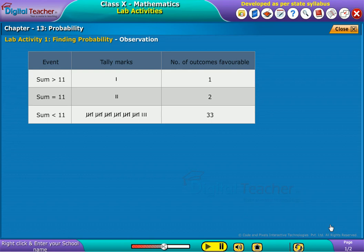Similarly, the chances of occurring the sum of two dice less than 11 are 33. Hence the number of favorable outcomes are 33.